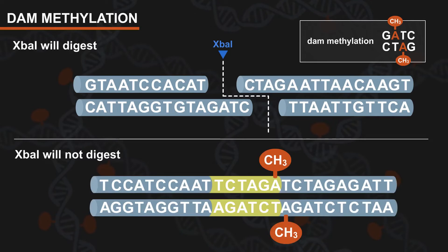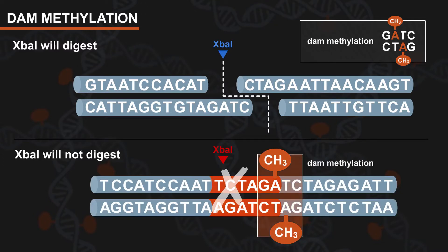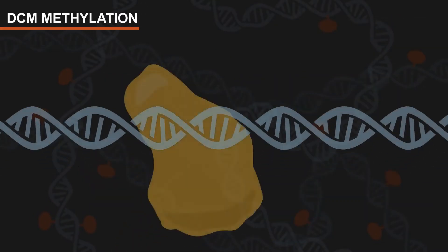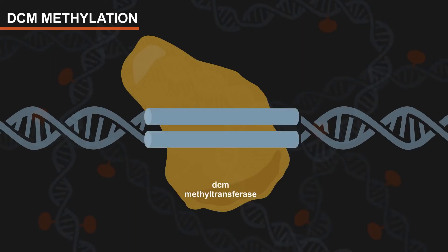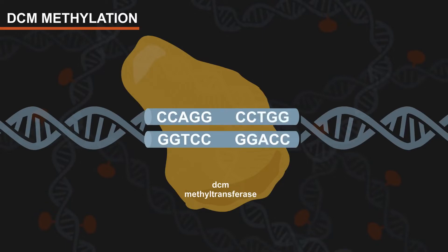However, in this second example, XbaI is unable to digest the DNA because a DAM methylation site overlaps with the restriction site. DCM methyltransferases behave the same way and recognize the sequences CCAGG and CCTGG.